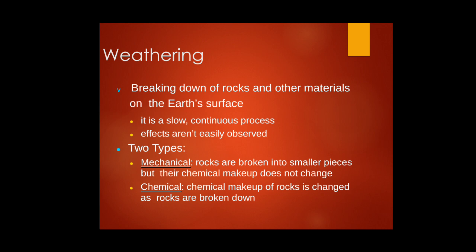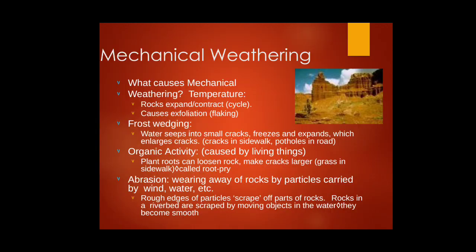In mechanical weathering, the chemical formula or chemical structure of the rock will not be altered. In chemical weathering, the chemical structure of the rock will be altered due to forces of nature like water, frost, and chemical reactions. For mechanical weathering, the first cause is temperature — the temperature of the earth's surface changes continuously from heat to cold and back to heat, causing rock surfaces to expand and contract, leading to exfoliation, where the rock breaks off in flakes or pieces.